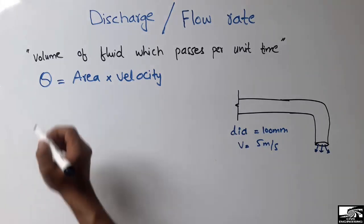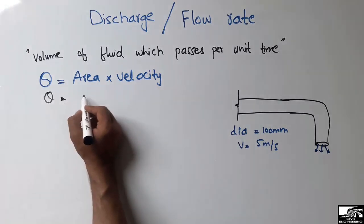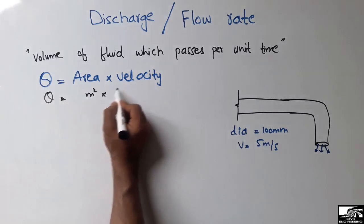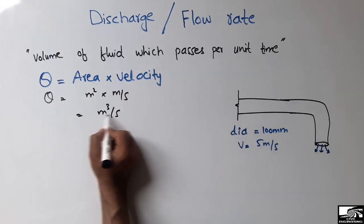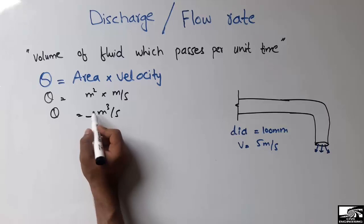The unit of area is meter square and velocity is meter per second, so we get the unit of meter cube per second. It means that the quantity of the fluid moving in a pipe per second...